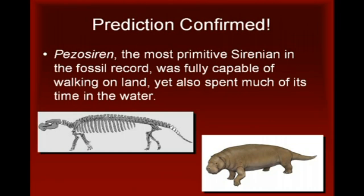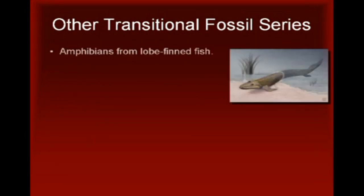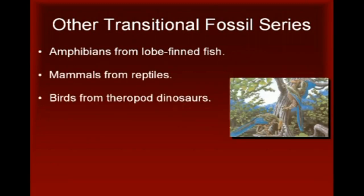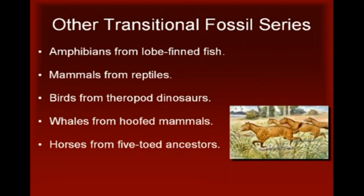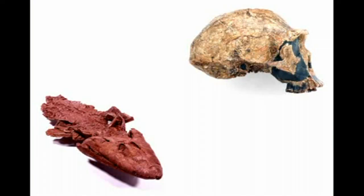So, there you have it. Fossil discoveries, combined with evidence from morphological, genetic, and embryological studies of existing organisms, lead us to a powerful explanation of a large set of biological observations. But these six examples only scratch the surface. Other transitional fossil series include fossils documenting the evolution of amphibians from lobe-finned fish, the evolution of mammals from reptiles, the evolution of birds from theropod dinosaurs, the evolution of whales from hoofed mammals, the evolution of horses from five-toed ancestors, and of course, the evolution of humans from bipedal apes. The list of transitional fossil series truly goes on and on. And these observations only make sense using the real science of evolution. I'm Jeremy Mohn. Thanks for watching my video.